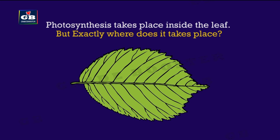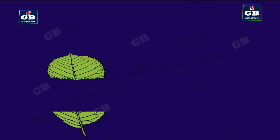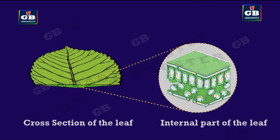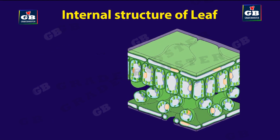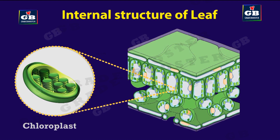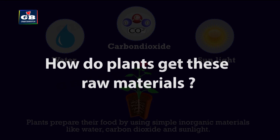Do you know the exact location of photosynthesis inside the leaf? If we look at the cross section of any leaf under a microscope, we can see green structures called chloroplasts. These are the structures in which photosynthesis takes place.